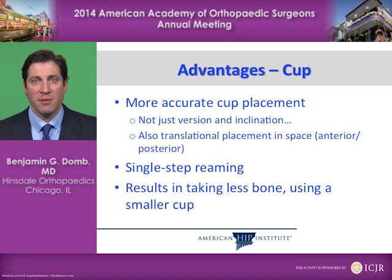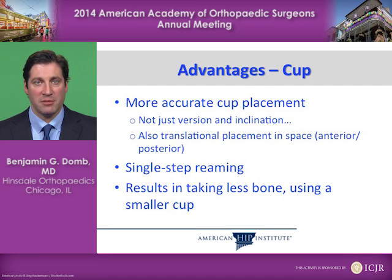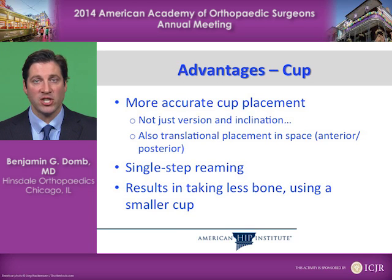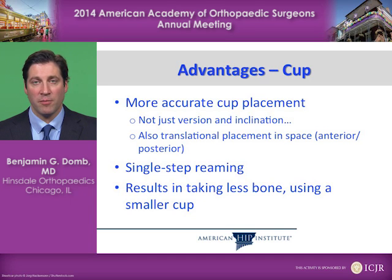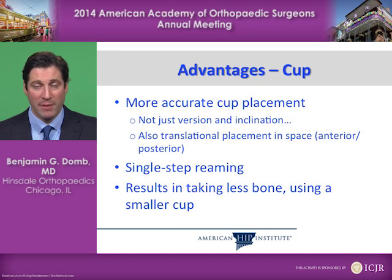In summary, the advantages with regard to the cup are more accurate cup placement — not just involving version and inclination, but also the translational reaming and placement in space, avoiding anterior or posterior over-reaming. A single-step reaming process is possible, using only a single basket.